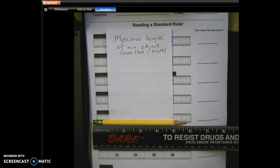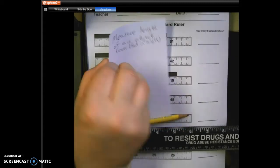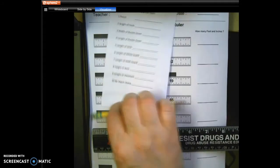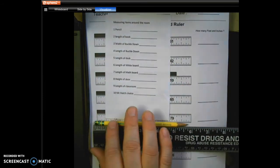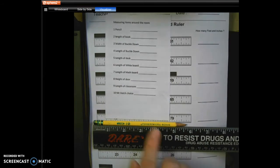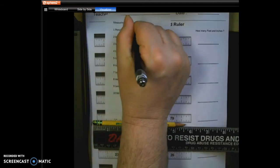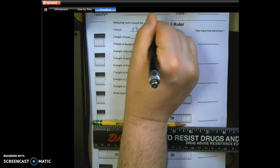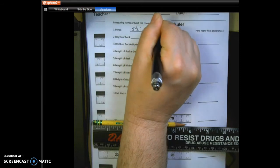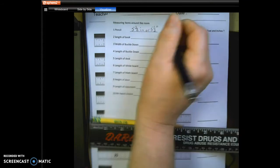With our assignment, the first things we had to do were on the other side of the page, and we had to measure these items. One of them was a pencil, and as we can see with this pencil right here, it is five and a half inches long. So on here we're going to write it as five and one-half, and you can either write it as inches or five and a half inches that way.